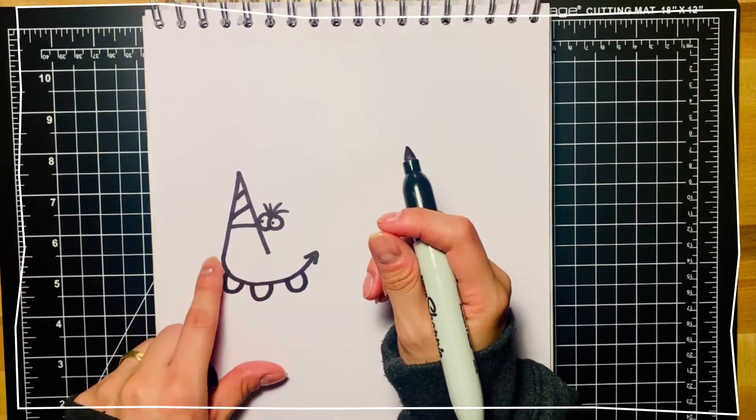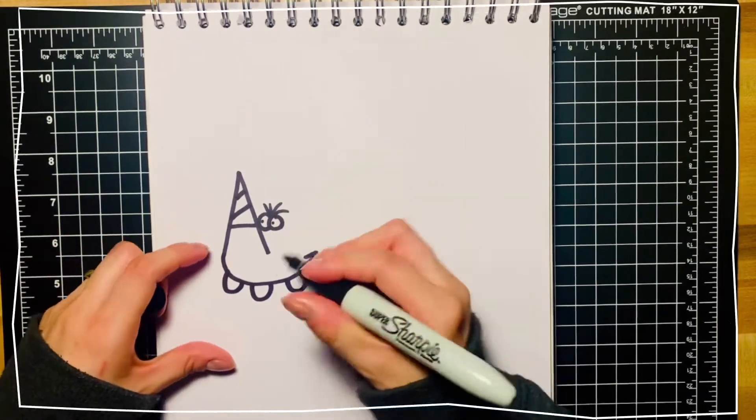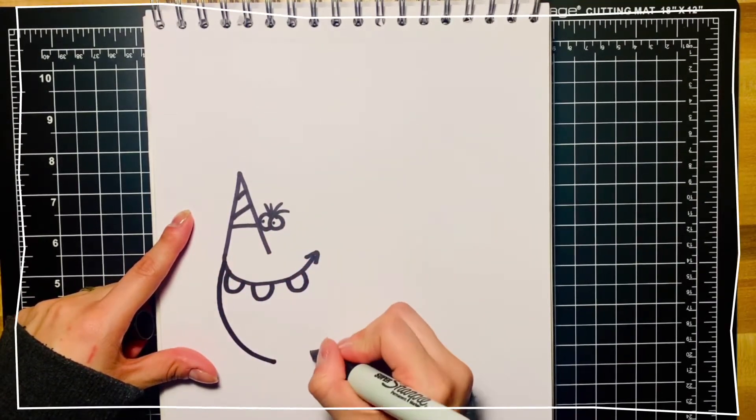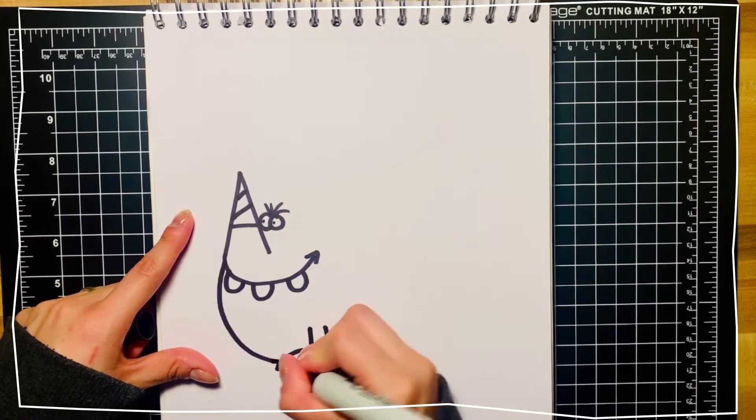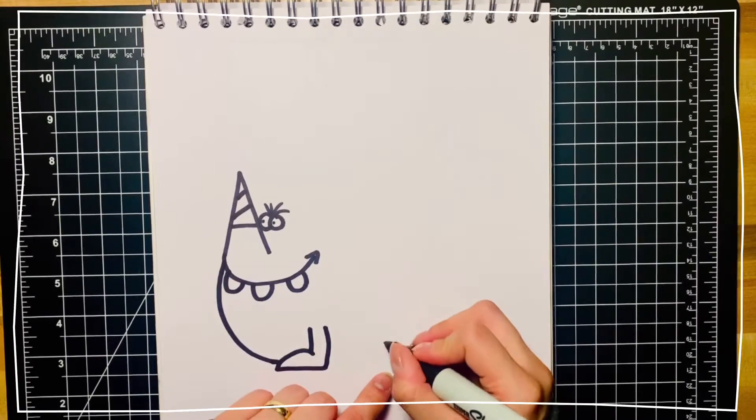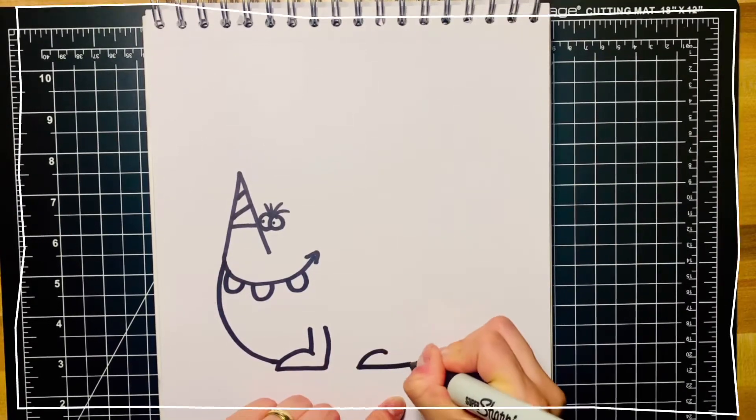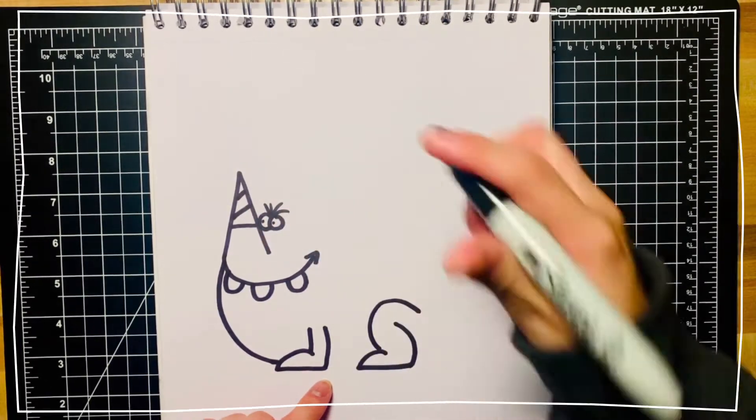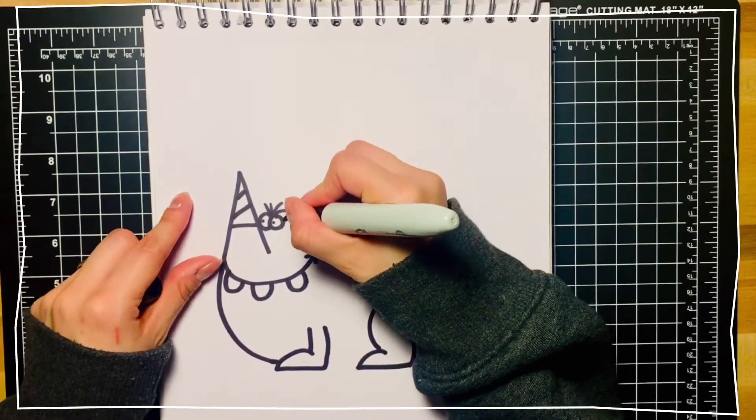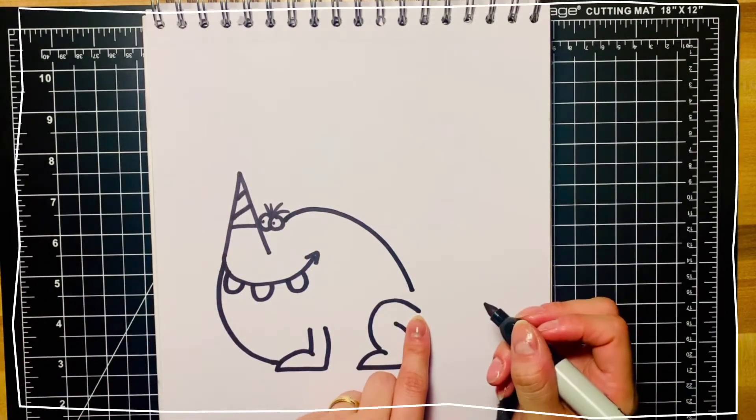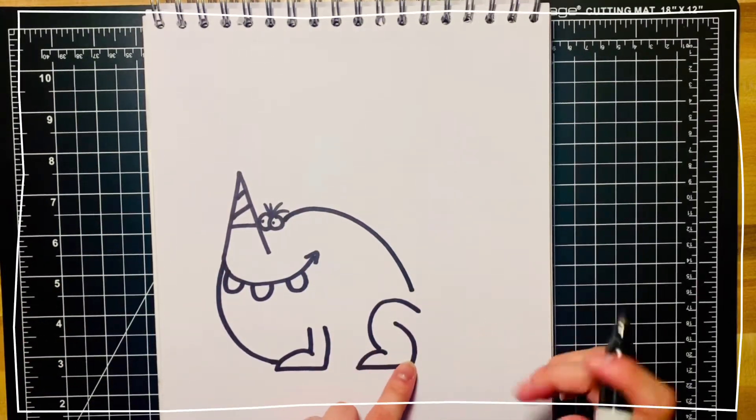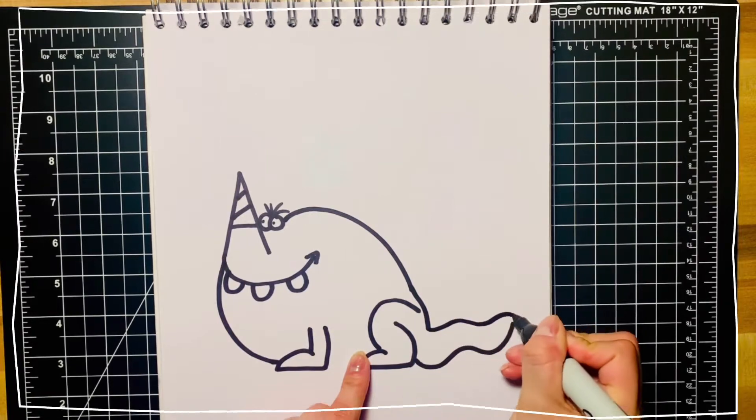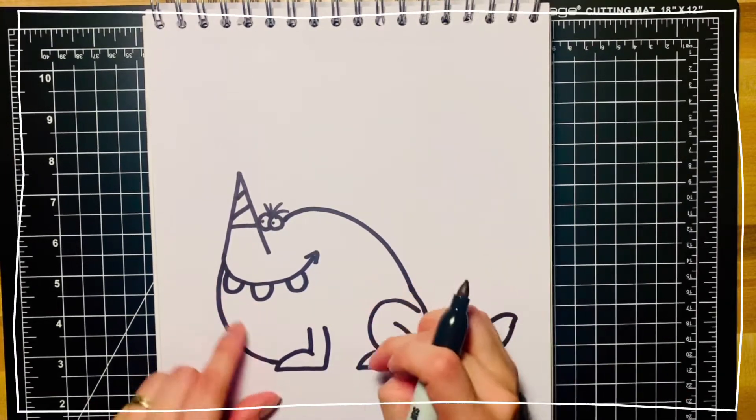And we're going to start to draw his belly and then his feet. Next, we're going to draw his back. And from right here, we're going to draw a little tail coming out. Now, we're going to go ahead and connect his belly.